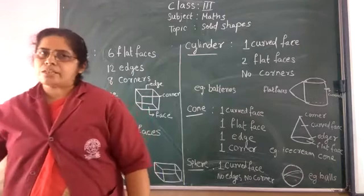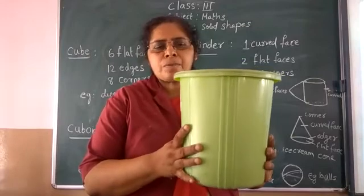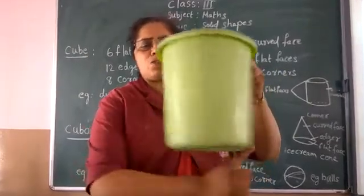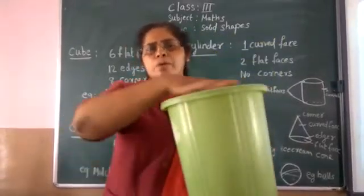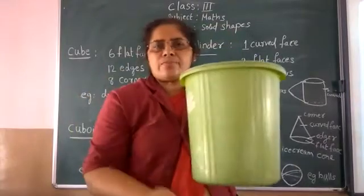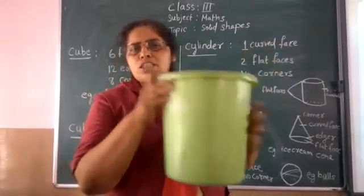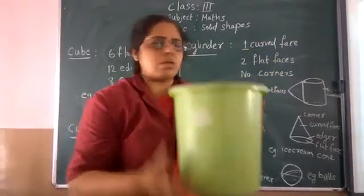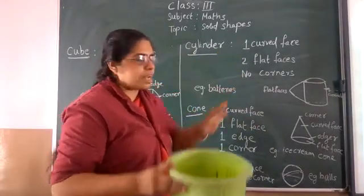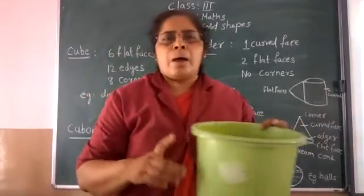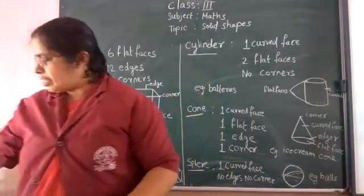Now we will study the cylinder. See, this is a dustbin — it looks like a cylinder. For a cylinder, this is the curved face, and there are 2 flat faces — one on top and one on the bottom. The curved part is in the middle, and there are no corners. You can also think of a pencil cell or a chalk — those are also cylinders.